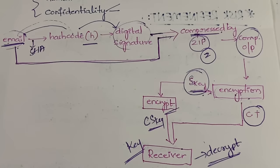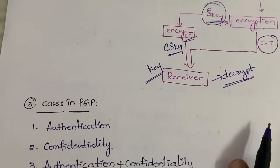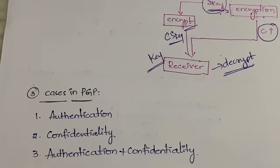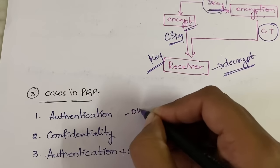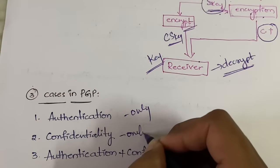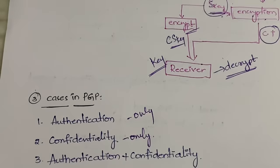On the receiver side, the decryption operation is performed. As mentioned, PGP has three cases: the first provides only authentication, the second provides only confidentiality, and the third provides both authentication and confidentiality together. These will be discussed in the next video.